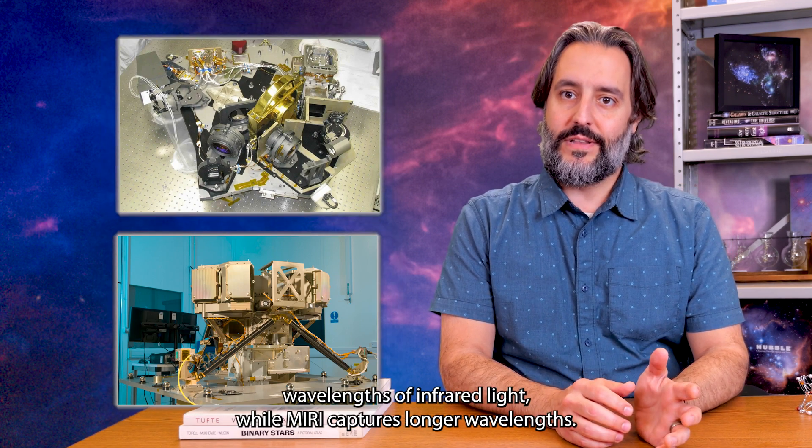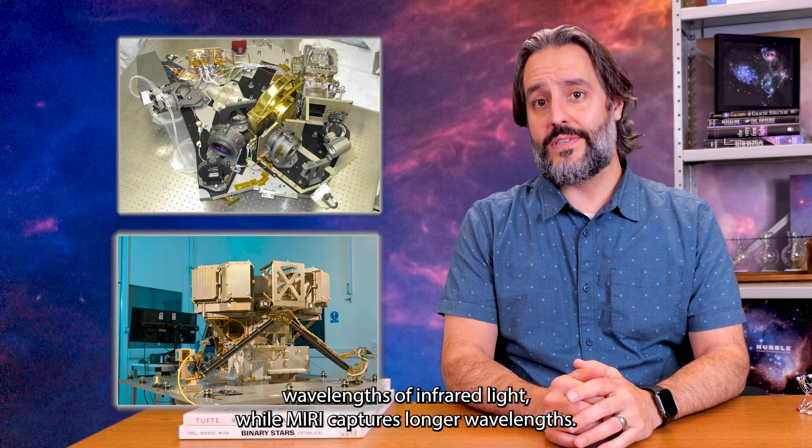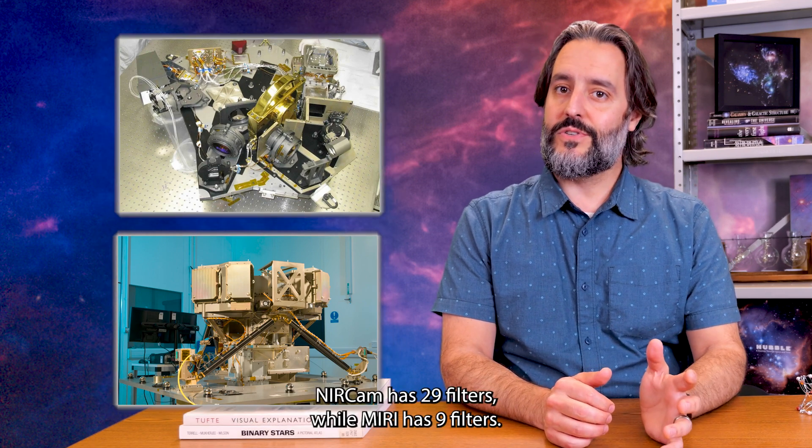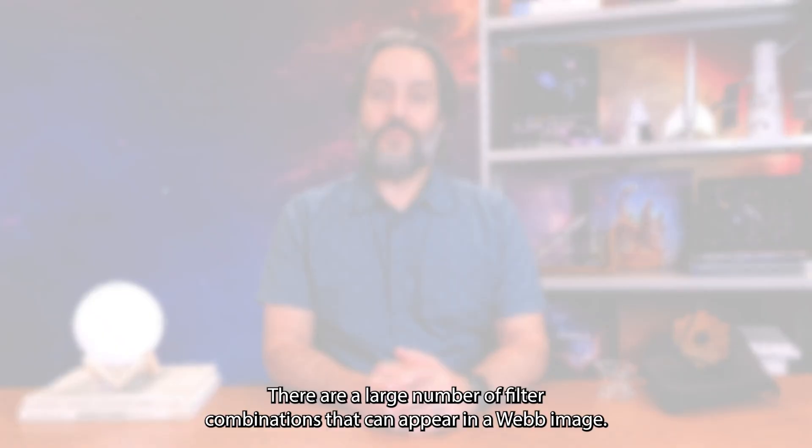NearCam captures shorter wavelengths of infrared light, while Miri captures longer wavelengths. NearCam has 29 filters, while Miri has 9 filters. There are a large number of filter combinations that can appear in a Webb image.